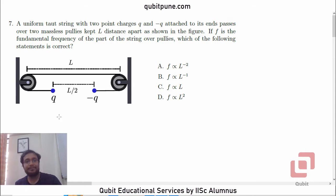Let's read the statement. A uniform taut string with two point charges Q and negative Q attached to its ends passes over two massless pulleys kept L distance apart as shown in the figure. If F is the fundamental frequency of the part of the string over the pulleys, which of the following statements is correct? F directly proportional to L to the power negative 2, negative 1, 1, and 2.